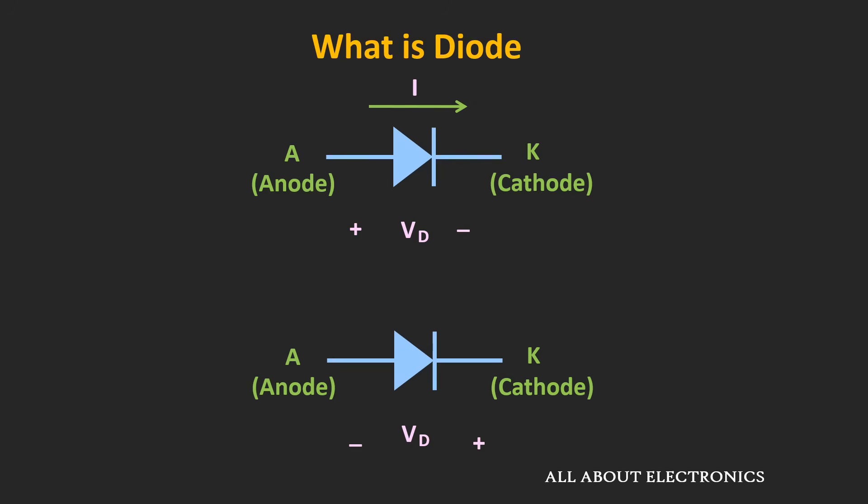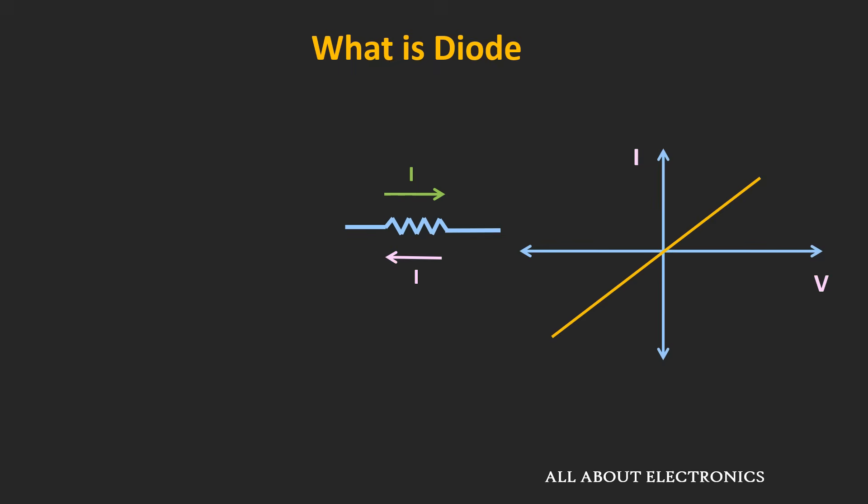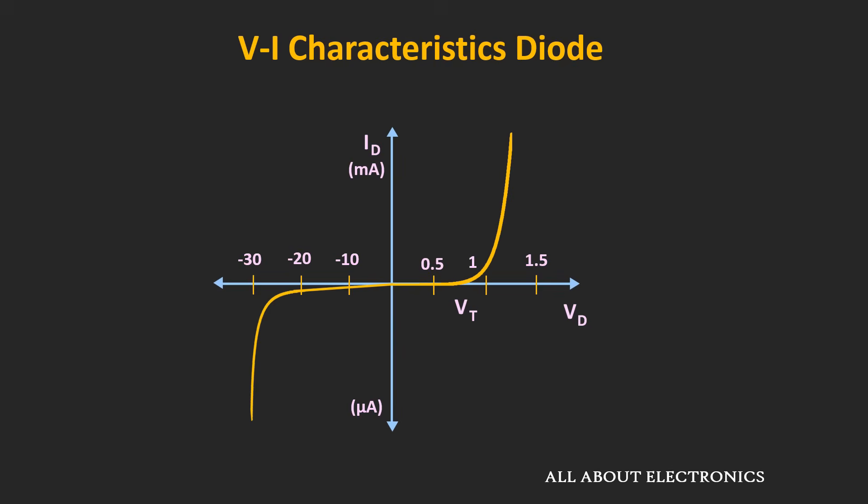When this diode is connected in a particular circuit and you want to analyze that circuit, it can be analyzed by knowing the voltage and current flowing through the diode using its VI characteristic. Unlike the resistor, which is a linear element following Ohm's law, the diode is a nonlinear element. So the relationship between the voltage and current for the diode is nonlinear, and it allows current in only one direction, almost blocking it in the reverse direction.